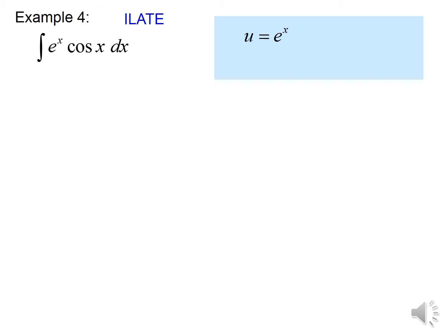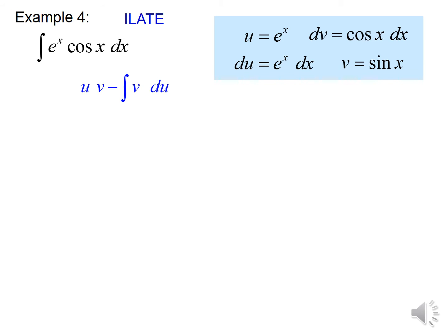I'm going to choose U equal to e to the X. So if U equals e to the X, then dV equals cosine X. Differentiating e to the X and integrating cosine X, then plugging into our formula gives us e to the X sine X minus the integral of sine X times e to the X.